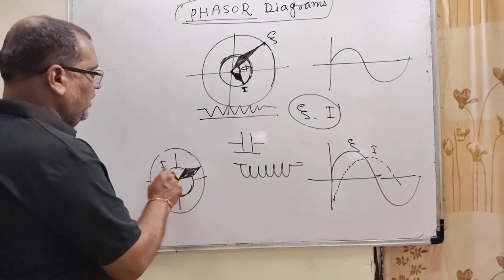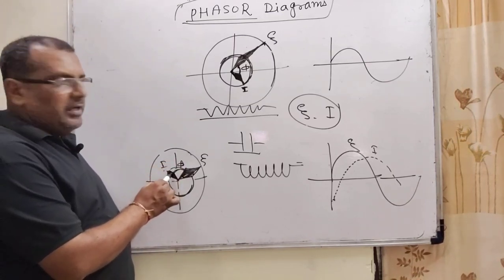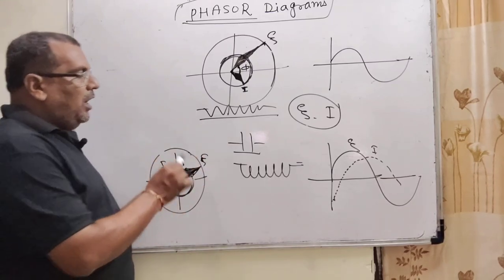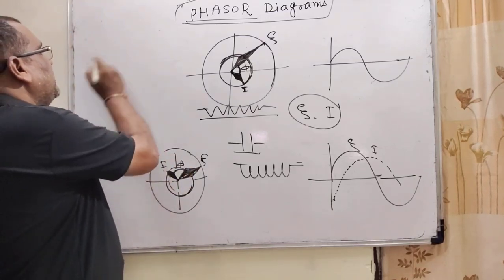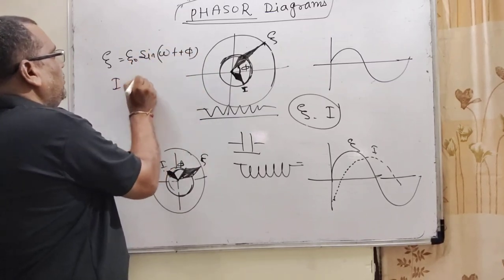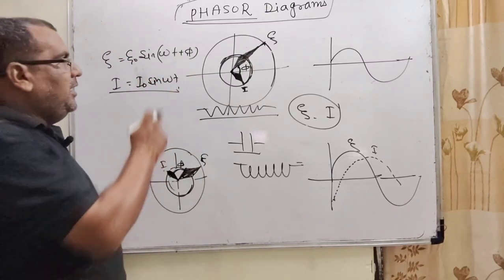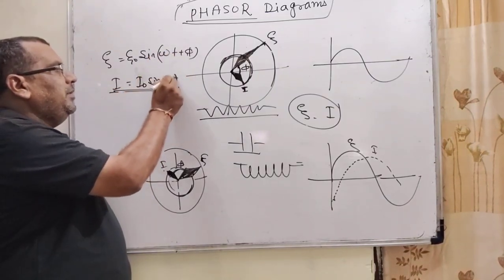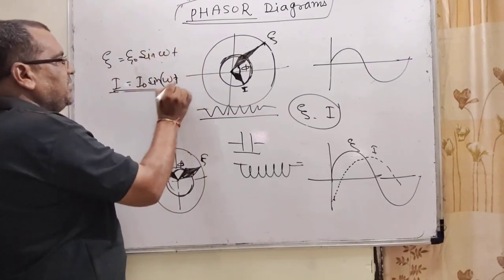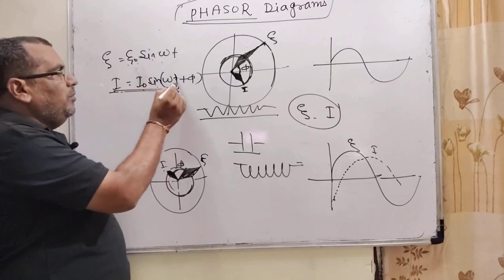यहाँ पर I current है, यह EMF है, और यह phase difference φ है। Current is leading। Equation के form में: E = E₀ sin(ωt + φ) और I = I₀ sin(ωt) — इसका मतलब EMF आगे चल रहा है और current पीछे। दूसरे तरीके से: EMF = E₀ sin(ωt) और I = I₀ sin(ωt + φ) — इस case में current आगे चल रहा है।